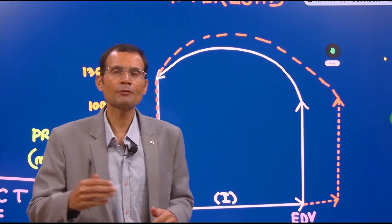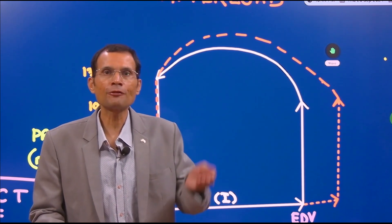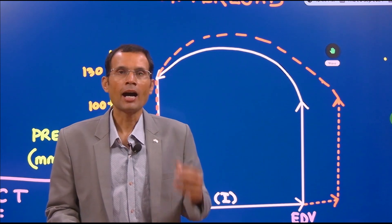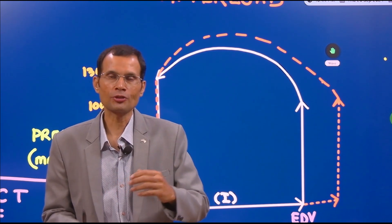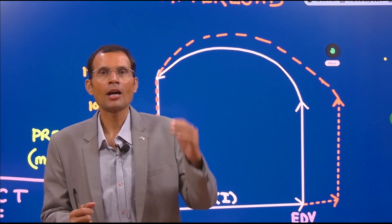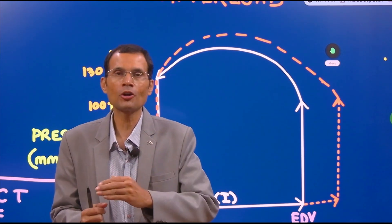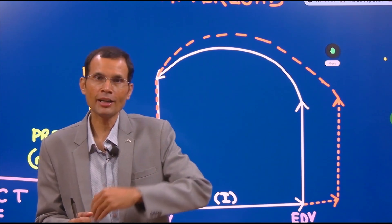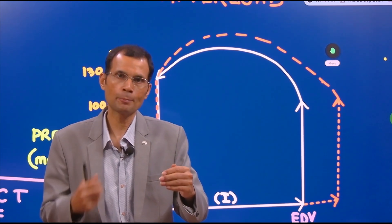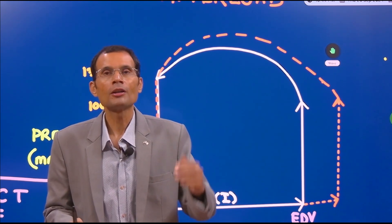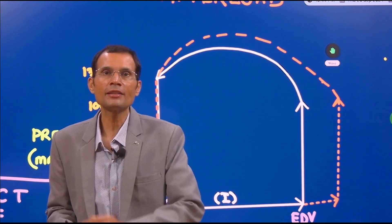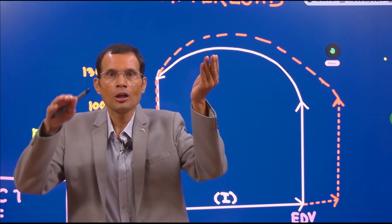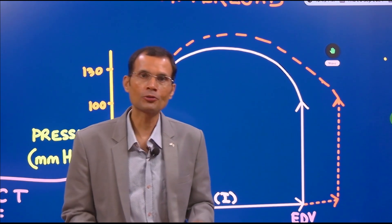Increased afterload decreases the stroke volume because afterload is an opposing force. As the contraction begins, afterload starts opposing the contraction, and against that afterload, the left ventricle has to contract and eject the blood. So the stroke volume decreases because it's an opposing force — increased afterload decreases the stroke volume.